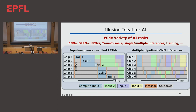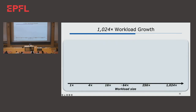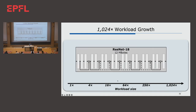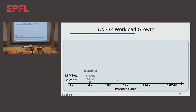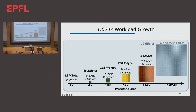One question people ask me all the time about illusion: can illusion keep up? If you look at the workload size — today it's ResNet-18 at 12 megabytes, then 48 megabytes, and you could have 12 gigabytes in 10 generations — can illusion keep up? That is a very important question, because you have to think about this not in terms of Moore's law, but in terms of the period when miniaturization ends. Let's say miniaturization has ended today — you want to scale from 12 megabytes to 12 gigabytes over the next 10 generations. What do you do? How can illusion help?